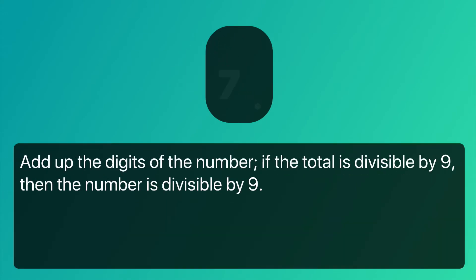Number 7: Add up the digits of the number. If the total is divisible by 9, then the number is divisible by 9.